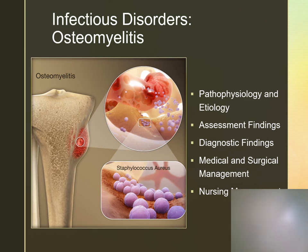Osteomyelitis is an infection of the bone, usually caused by pathogens — the most common one is Staphylococcus aureus — and there are many complications. These clients have inflammation of the tissue, bone necrosis because of vascular insufficiency, and formation of new bone around the site. It can be caused by trauma or contamination during procedures. There is also an increased risk with long-term dialysis, chemotherapy, steroid or immunosuppressant therapy, and vascular insufficiency.